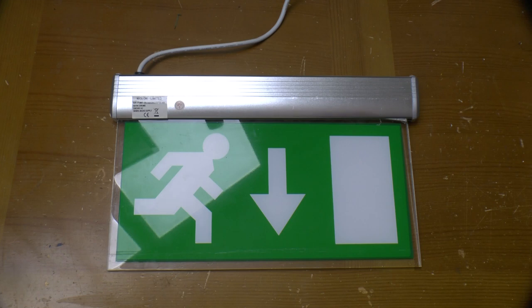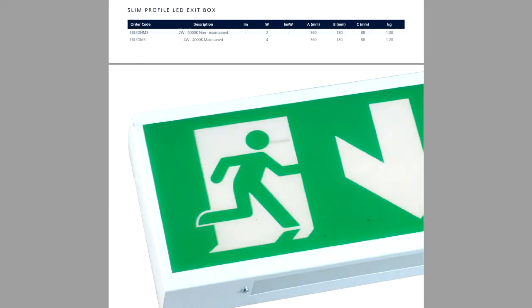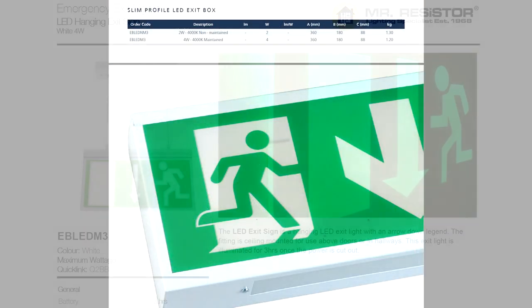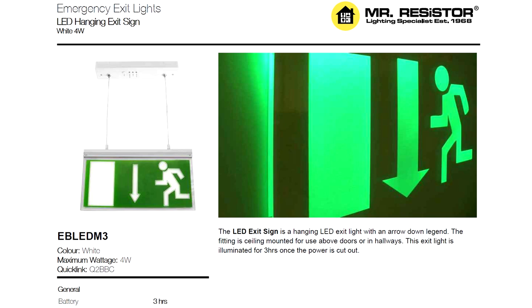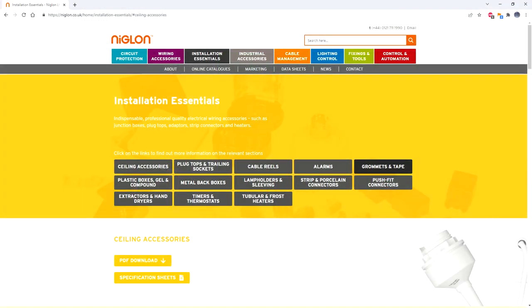Greetings. Today we're going to check out this LED emergency light fitting and pick holes in the design. According to the label, it's an EBL EDM3, apparently made by Niglon. Not to be confused with the EBL EDM3 made by Tamlite, nor the EBL EDM3 sold by Mr. Resistor, and not found on the Niglon website.